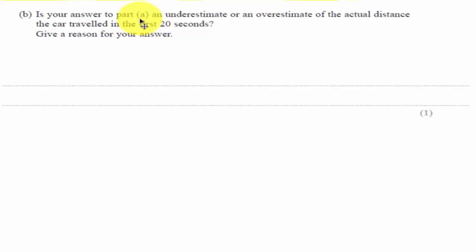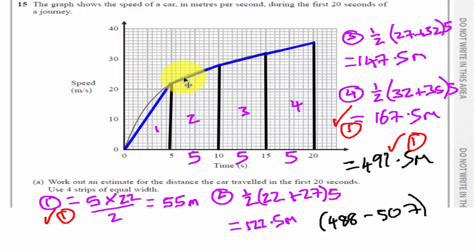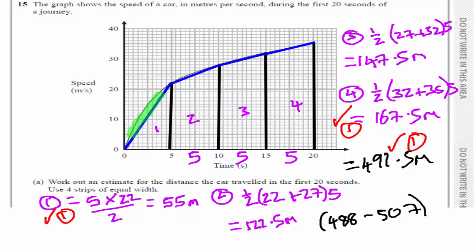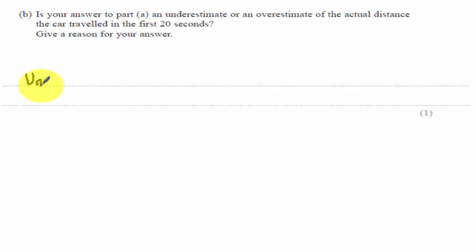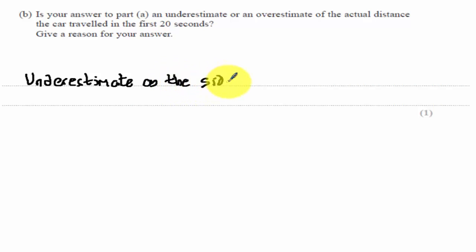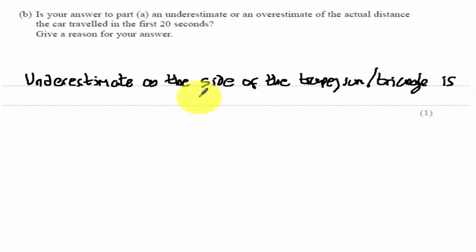Part B: is your answer to part A an underestimate or an overestimate of the actual distance? Give a reason. If we go back to part A and look at the picture, you can see my blue line — which is the top of my trapezium or triangle — is below the actual journey the car took. This bit here hasn't been counted as part of the distance. The blue line is below the actual journey, so it would be an underestimate: the sides of the trapezium or triangle are below the actual journey line.